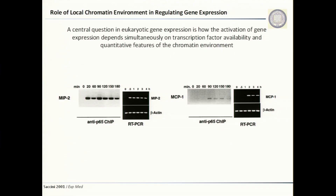In the context of HIV, as some of the other speakers mentioned today, HIV integrates randomly within the host genome, or sort of randomly. One of the questions is: depending on where HIV integrates, how does that regulate gene expression? The other question I was trying to answer was understanding fundamental eukaryotic gene expression and how availability of transcription factors and quantitative features of the chromatin environment together regulate gene expression.